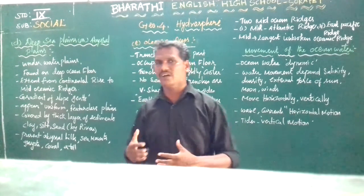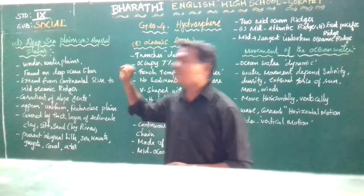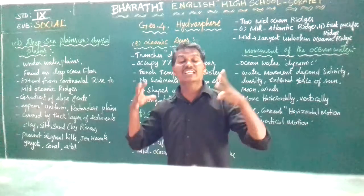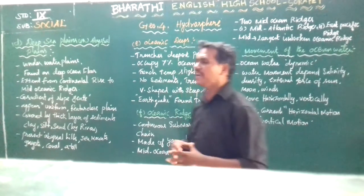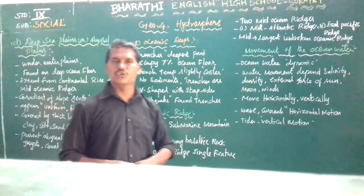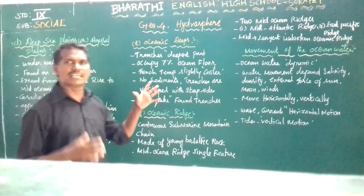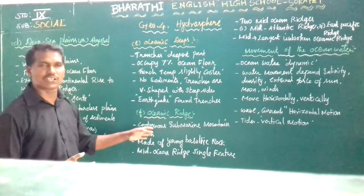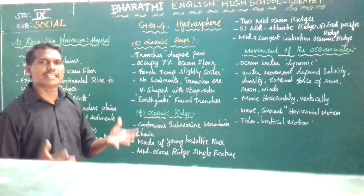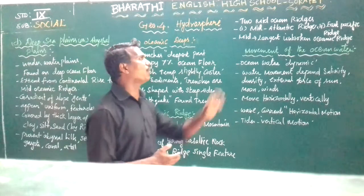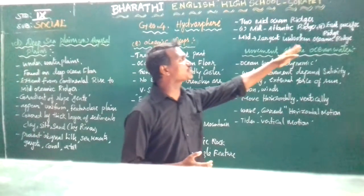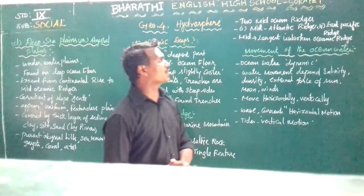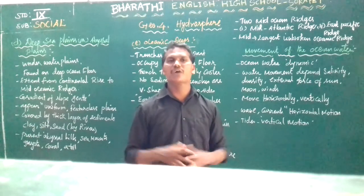To summarize what was discussed in this video: deep sea plains or abyssal plains, oceanic trenches which are the deepest part with no sediment and V-shaped, and oceanic ridge which is a continuous mountain chain with two types — mid-Atlantic ridge and east Pacific ridge, with the mid-Atlantic ridge being the largest unbroken oceanic ridge. The remaining topics will be seen in the next video. Thank you.